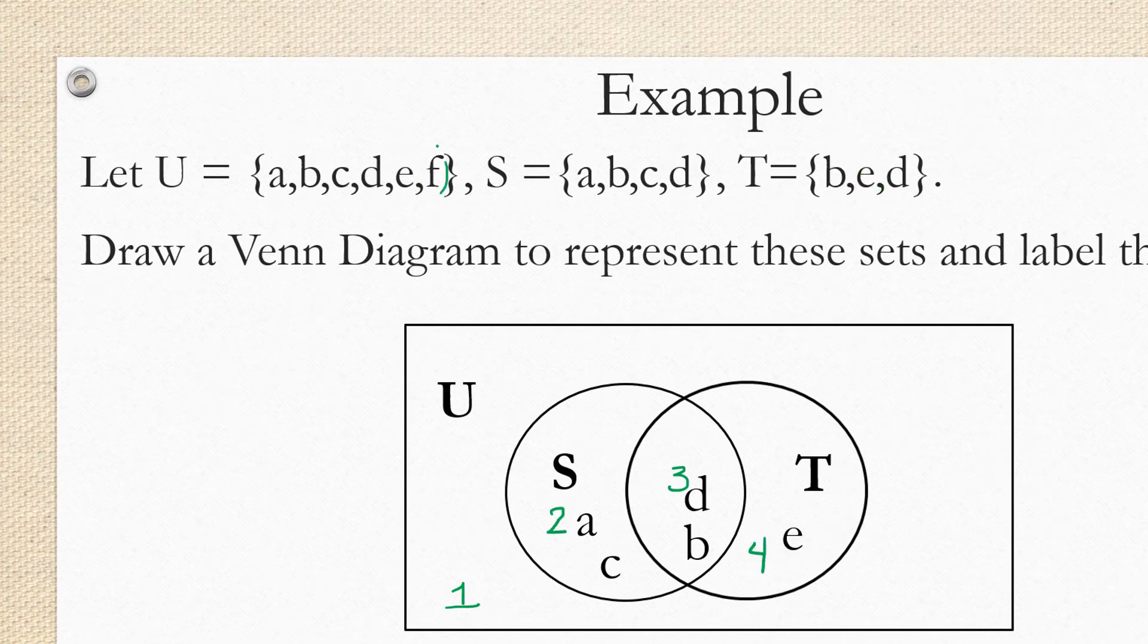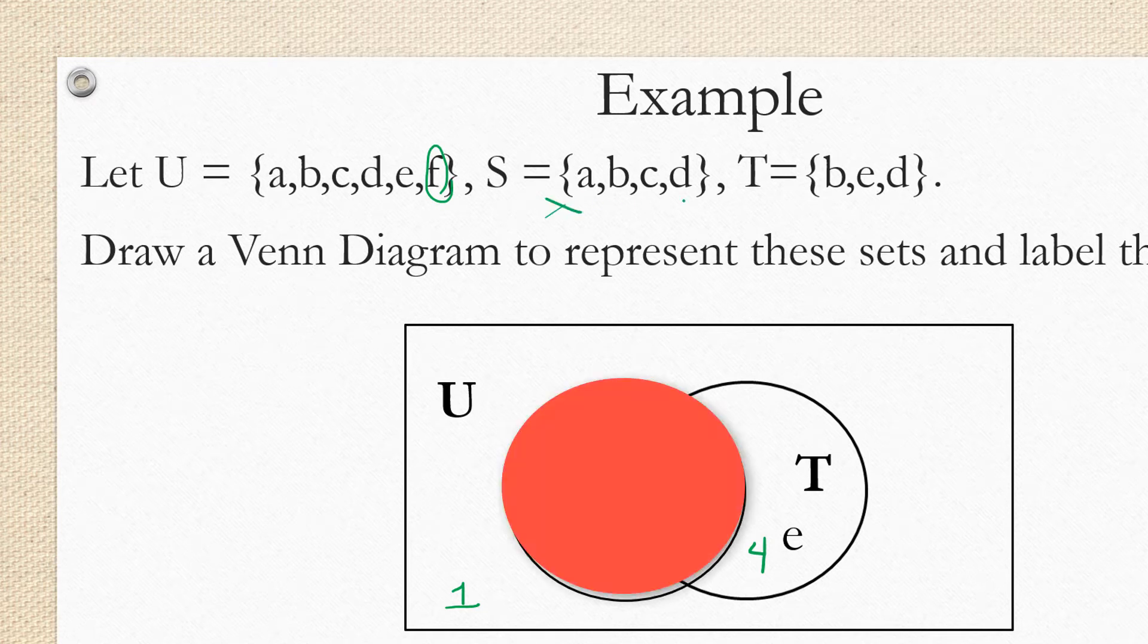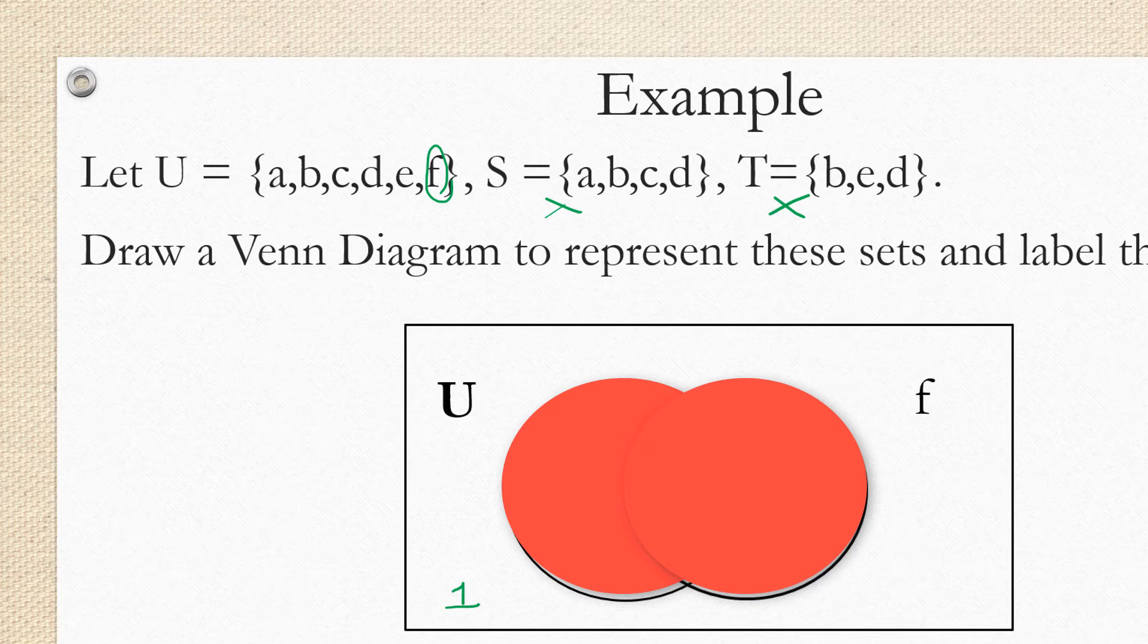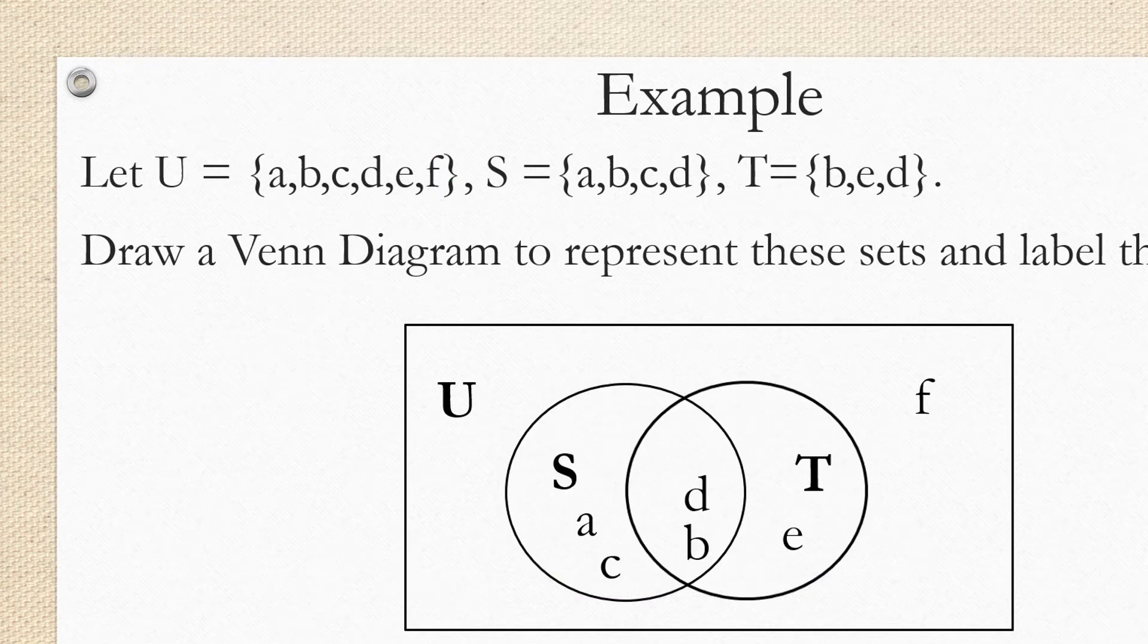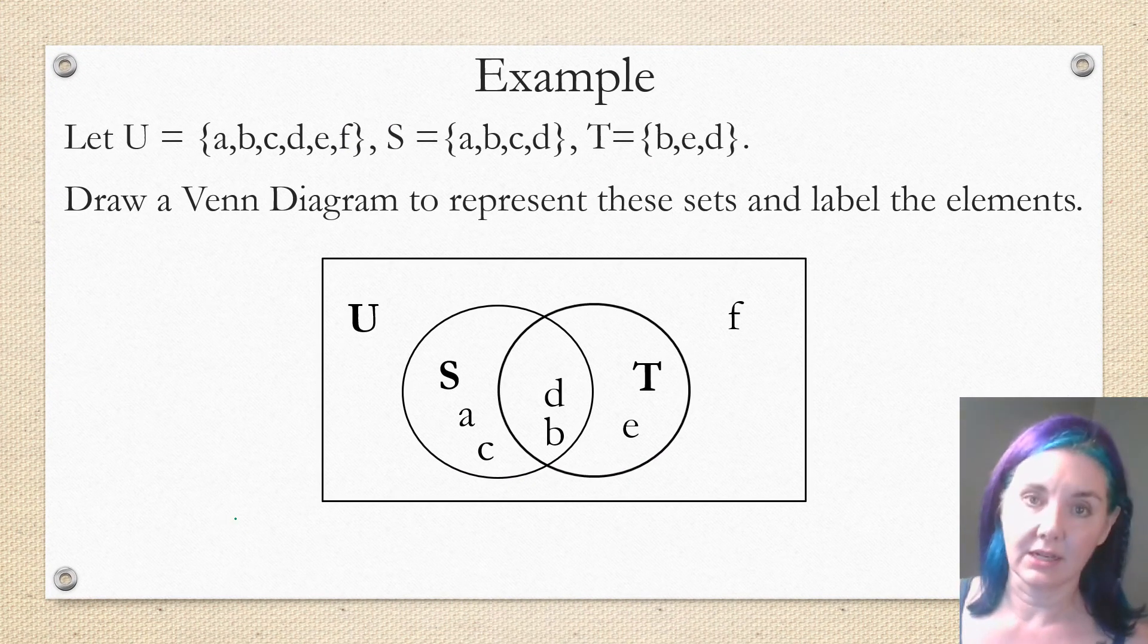Finally, we're going to look at the element F. F is not in S and it's not in T. So we have to place F in region 1. If I take away all of the region labels, our answer is this Venn diagram.